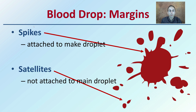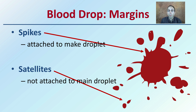We also look at the margins of a blood drop. Looking at the spikes, which are attached to the main droplet, those are the spike regions. Then we have the satellites, which are not attached to the droplet and are located separately. The degree of spikes and number of satellites present can help indicate how high or how close that droplet may have fallen.